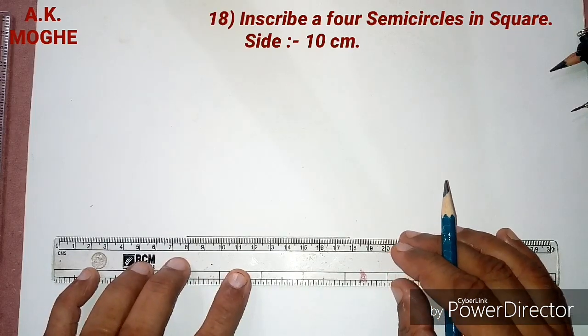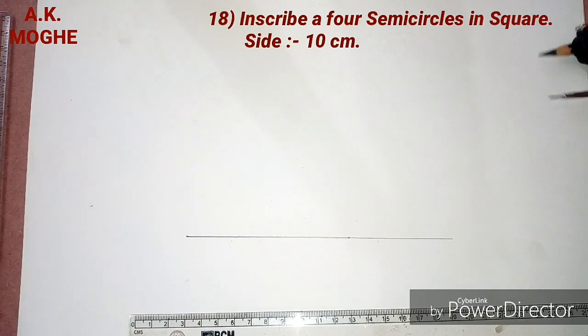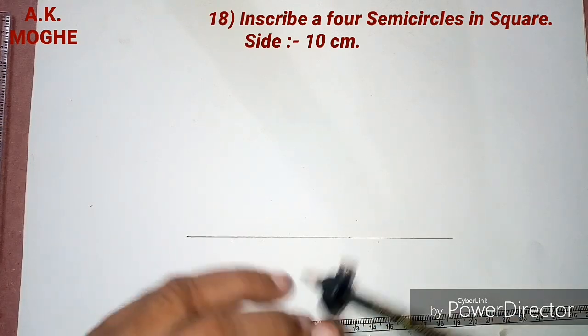Hello guys, welcome to the next lesson of the Intermediate Geometry class. Here we are solving a problem with inscribing four semicircles in a square.